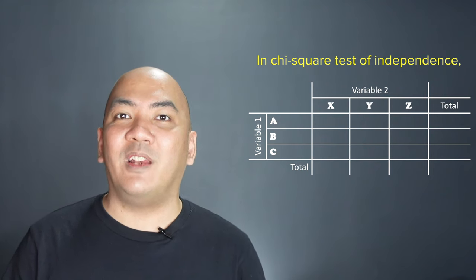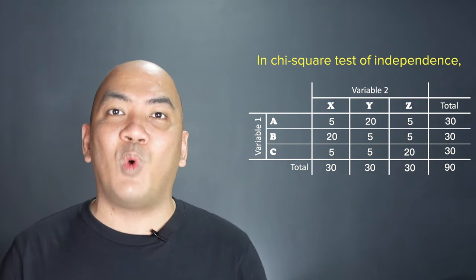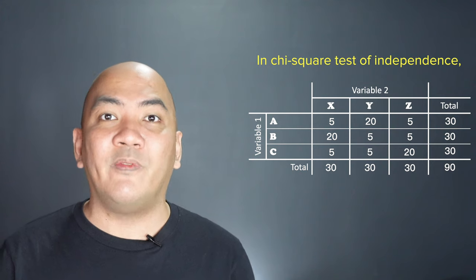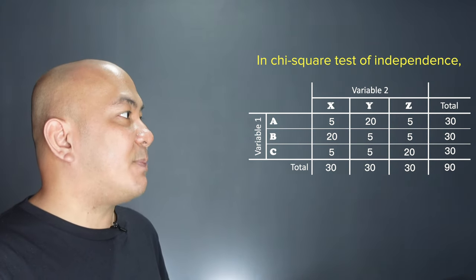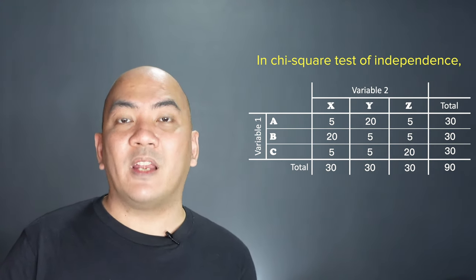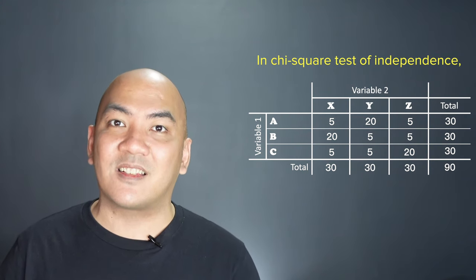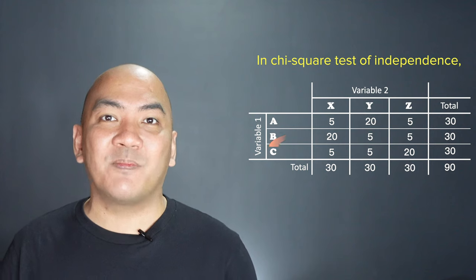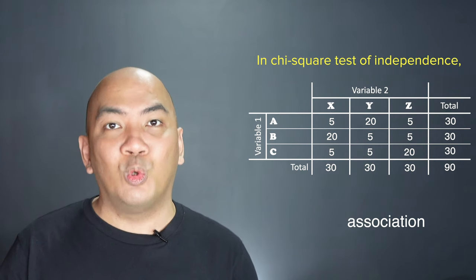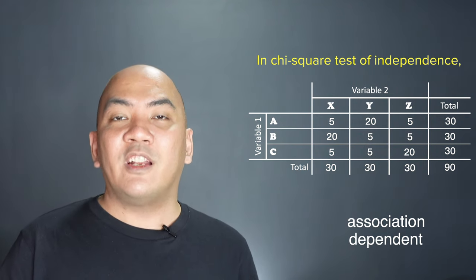However, if we have a cross-tabulation in which the observed counts are different — in other words, the proportions differ — we can see an association between variable 1 and variable 2. There is a correspondence in the responses: the response in variable 2 depends on the response in variable 1. If the response in variable 1 is A, the response in variable 2 is Y. If B, then X. If C, then Z. This is what we mean by association existing between the variables.